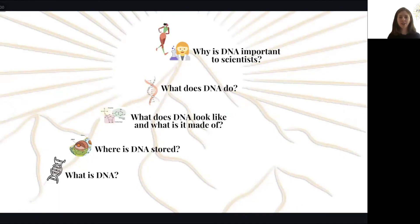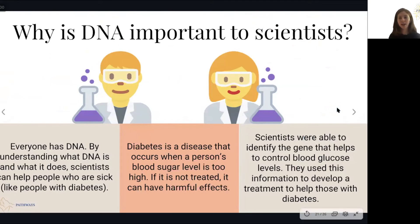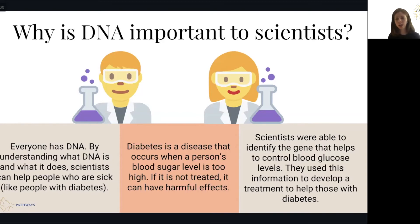Finally, let's talk about why DNA is so important to scientists. One important reason is that everyone has DNA, so by understanding what DNA is and what it does, scientists can help people who are sick and find cures or treatments for disease. An example is diabetes, which occurs when a person's blood sugar level is too high. If untreated, it can have really harmful effects. Scientists were able to identify the gene that helps control blood glucose levels — the section of the DNA — and use that information to develop a treatment, so those with diabetes can live a much better quality of life.